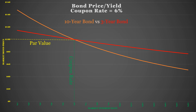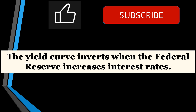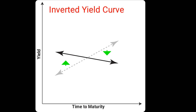Bonds with longer remaining terms have greater interest rate risk, as you can see in this graph, which shows how bond prices vary with interest rates for a 10-year bond versus a 3-year bond. When interest rates are rising, the demand for longer-term bonds increases over that for shorter-term bonds, because longer-term bonds have a greater potential for capital gains when interest rates decline. This is why the yield curve inverts.